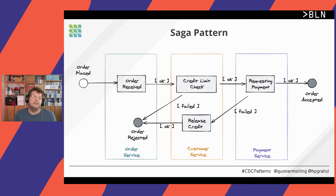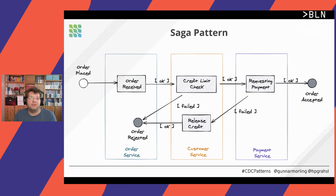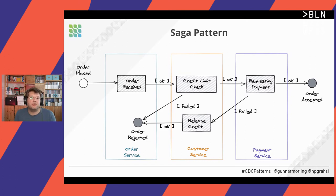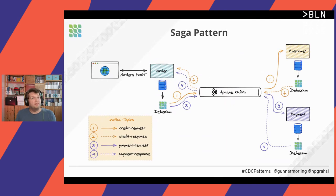But if the payment step fails — for example, the credit card number is invalid — we need to go back to the customer service and compensate: undo what was done before by releasing the allocated credit amount. The order moves to a rejected state and the overall saga reaches a consistent state. It's important to understand that we have reduced ACID guarantees here — specifically around isolation. Once the customer service allocates the credit amount, this is already visible to other clients even while the overall flow is still running.